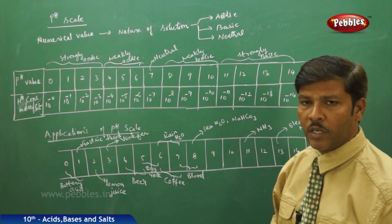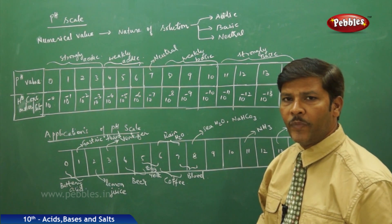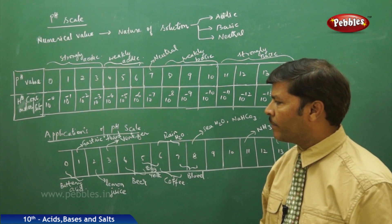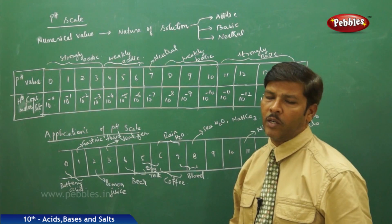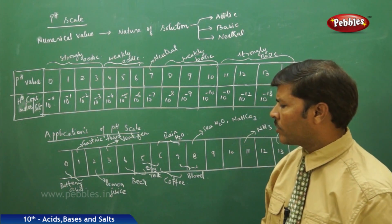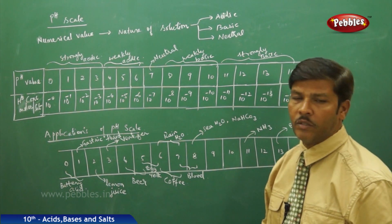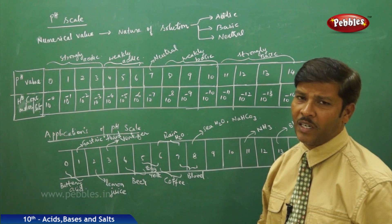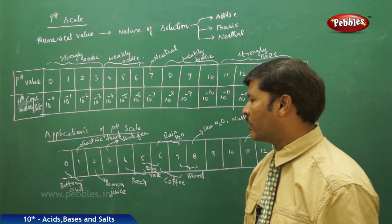The gastric juice produced in our stomach during metabolic activities converts complex substances into simpler ones. Our stomach generates hydrochloric acid, and the pH of gastric fluid is 1, which is very low. Lemon juice, obtained from the citrus fruit, has a pH of 2 because it contains citric acid, which is less than 7, confirming its acidic nature.